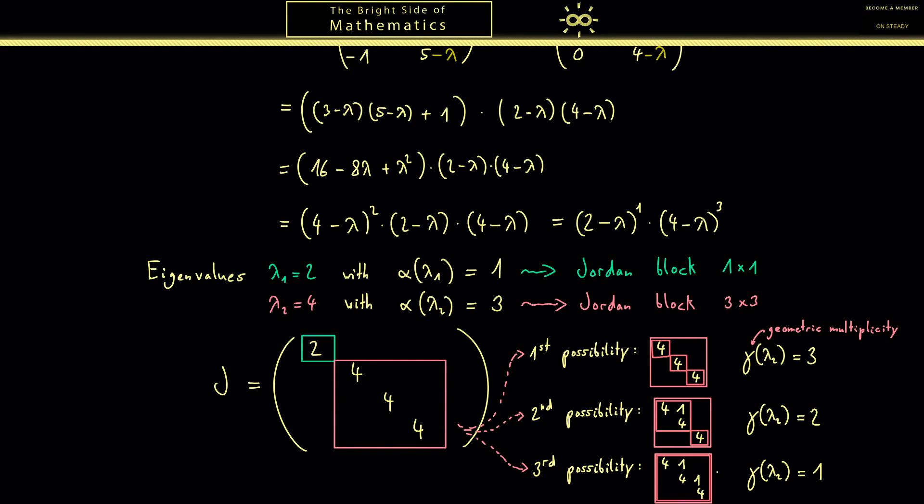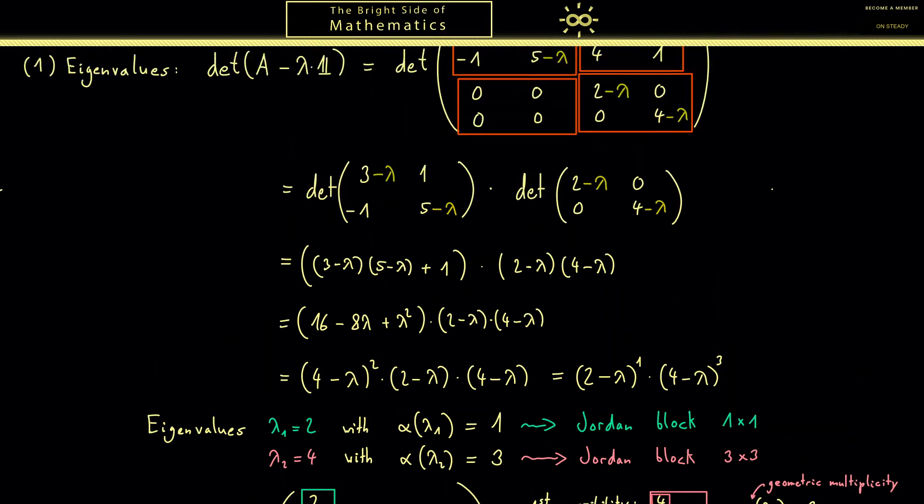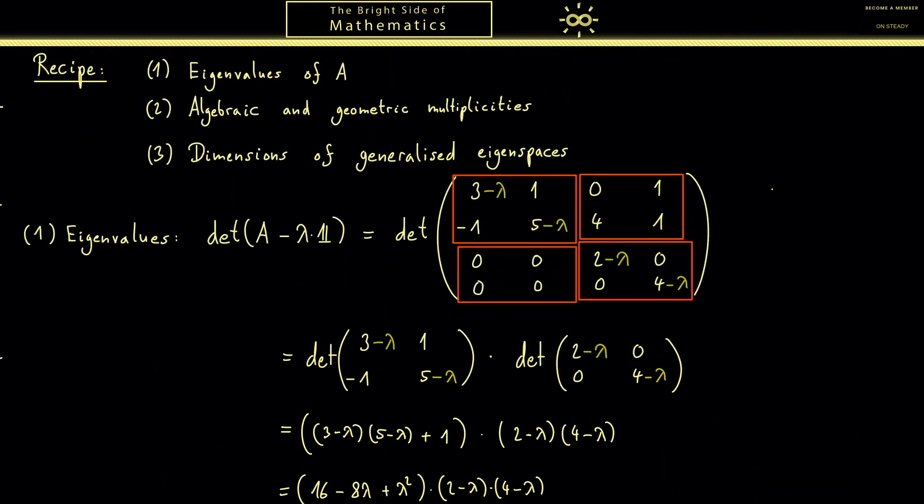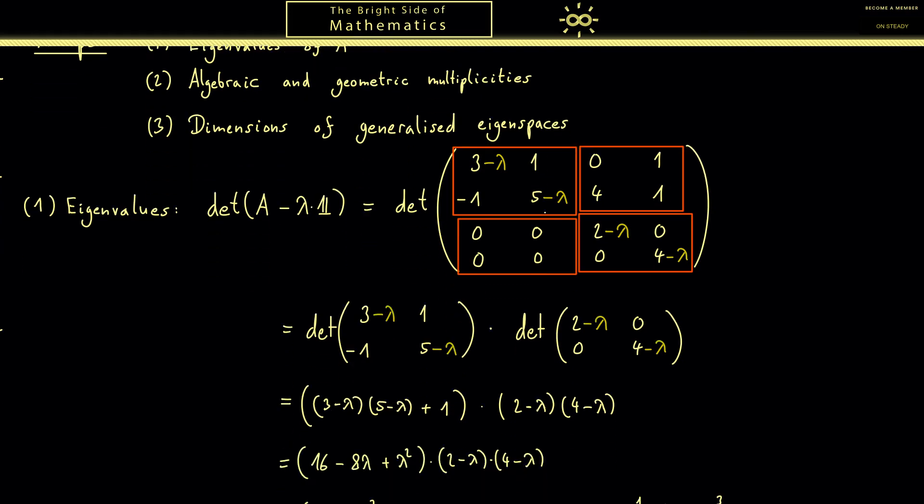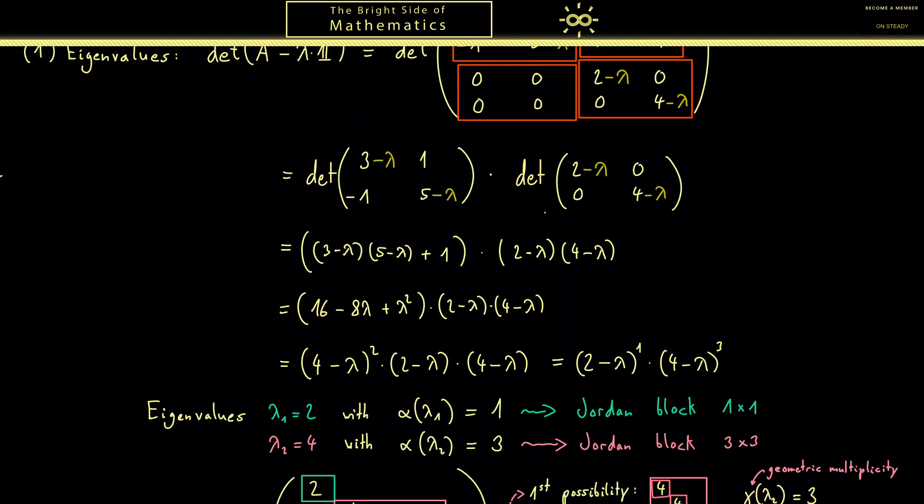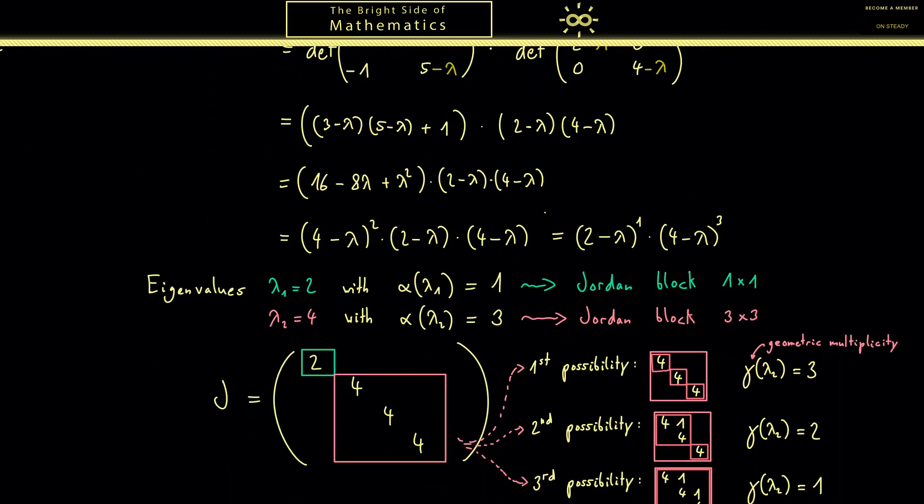So the conclusion for this example here is that we only need to calculate the geometric multiplicity for knowing the Jordan normal form. When we go back to the recipe you see that this is a nice example because we calculate the eigenvalues, we calculate algebraic and geometric multiplicity, and we don't have to do step 3. So we don't need to calculate the generalized eigenspaces because it's a nice example. But don't worry, I will do in the next video another example where we need to calculate these next steps.